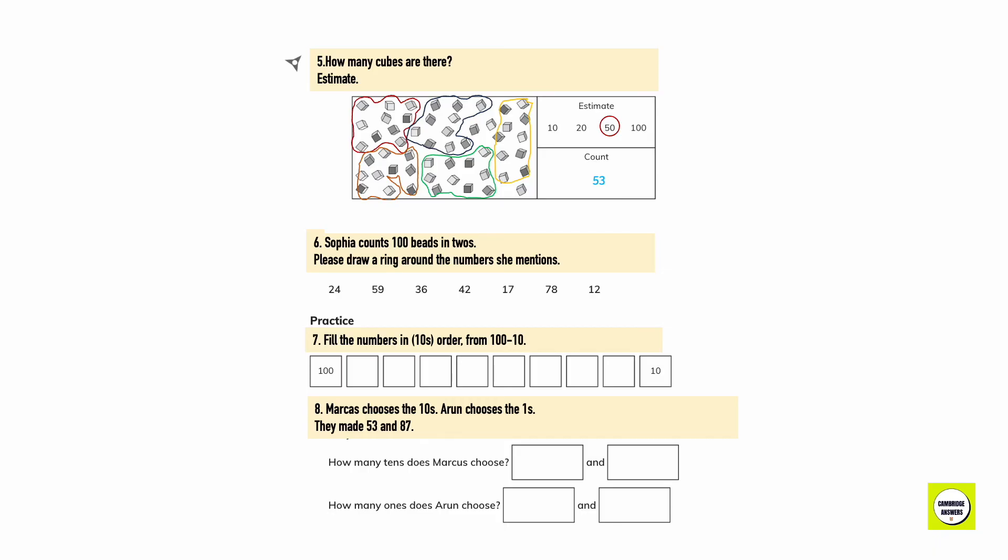Sophia counts 100 beads in twos. Please draw a ring around the numbers she mentions. So if she's counting in twos, we're going to have even numbers. 24, 36, 42, 78, 12.